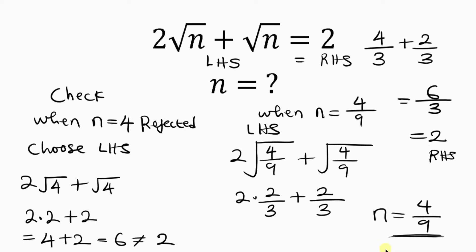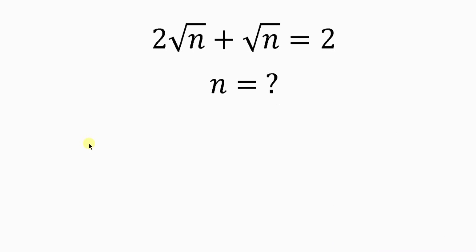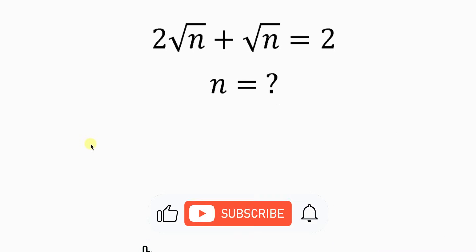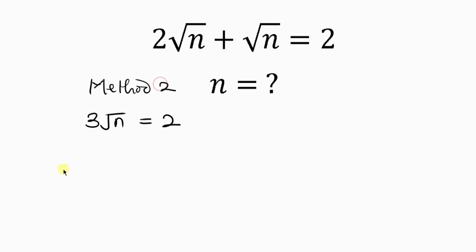Let me show you a second method, which is usually very short and easy. We can just add the like terms: 2 root n plus root n gives 3 root n, and this is equal to 2.